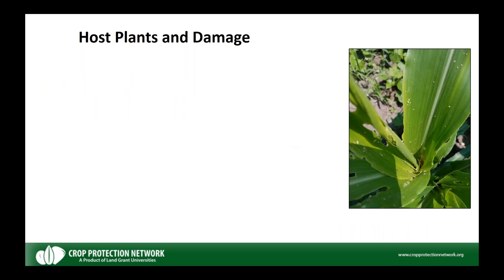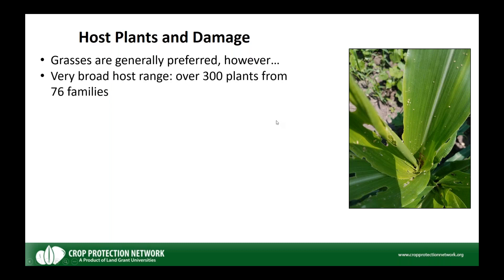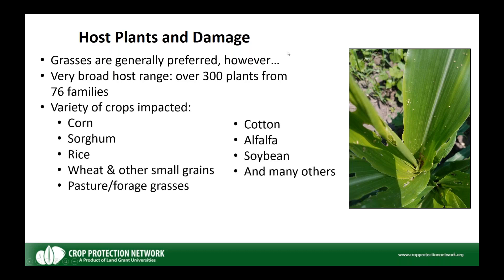Fall armyworm attacks a wide variety of plants and crops. As a general rule, grasses are preferred, but they have an extremely broad host range — over 300 plants from 76 different families have been reported. Important crops damaged include corn, grain sorghum, rice, wheat and other small grains. One unique situation seen this year was reduction in stand of grass cover crops like cereal rye, which raises interesting economic decision-making around pest management in cover crops.